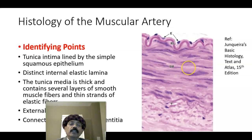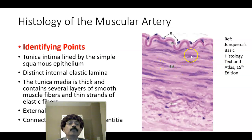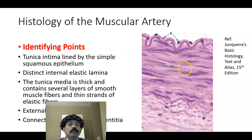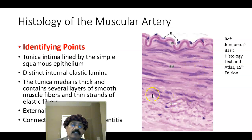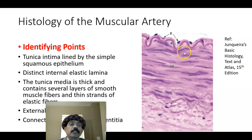There may be up to 40 layers of smooth muscle in the tunica media. Between the smooth muscles there are elastic fibers, and the smooth muscles communicate with each other by means of gap junctions. The external elastic lamina is indistinct in this slide, and both the internal and external elastic laminae are fenestrated.